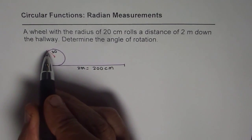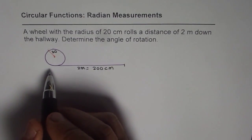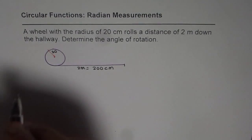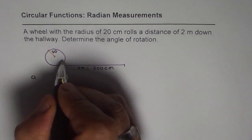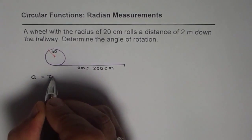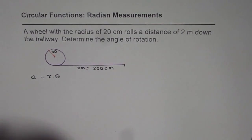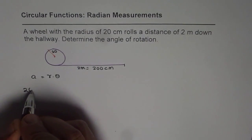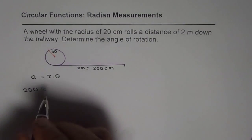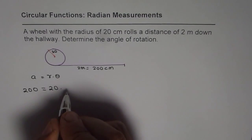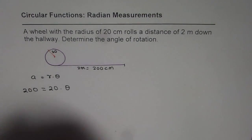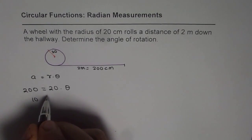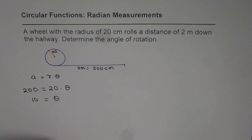This arc length depends on how much angle the wheel has rotated through. When we measure angle in radians, we use the formula: arc length (a) equals r times theta. The distance moved is 200 centimeters, so we write 200 equals 20 times theta. From here we can find theta, where theta is in radians — 200 divided by 20 gives us theta equals 10.